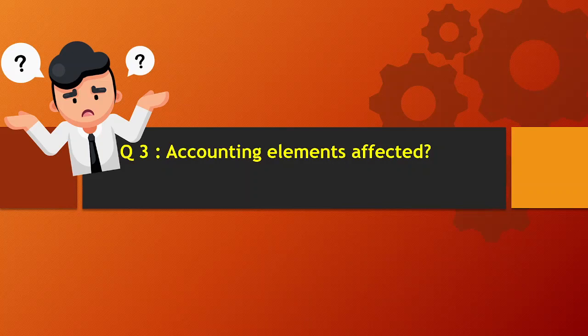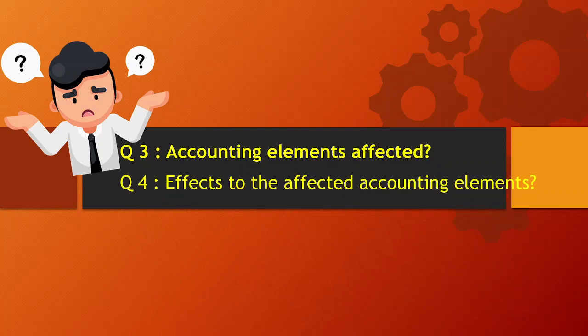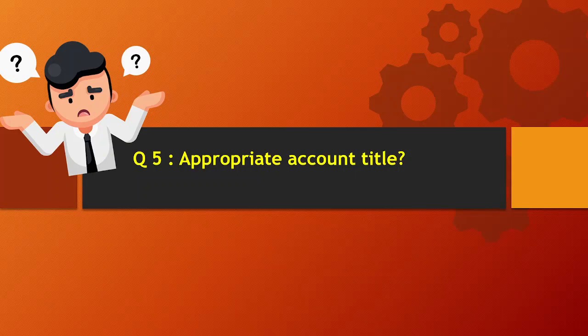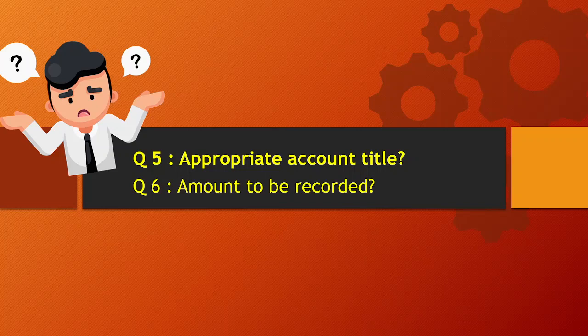Let us review. The accounting elements are assets, liabilities, owner's equity, revenue, and expenses. Next, what is the effect on the affected accounting elements — is it an increase in assets, increase in liabilities, increase in owner's equity, or the reverse? That is question number four. For question number five, what should be the appropriate account title to be used in recording such business events or transactions? And finally, what is the amount to be recorded in our books of accounts?